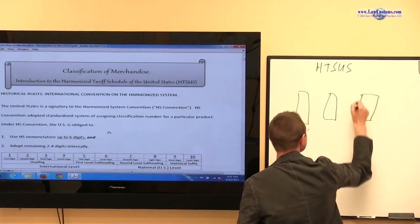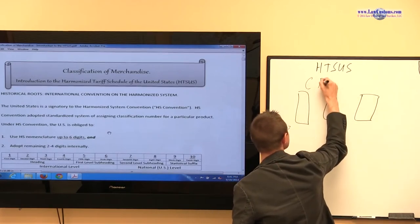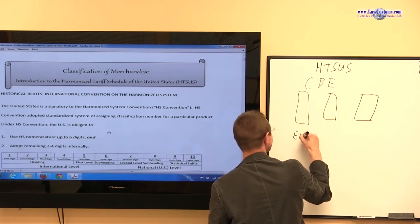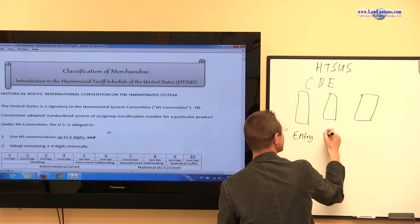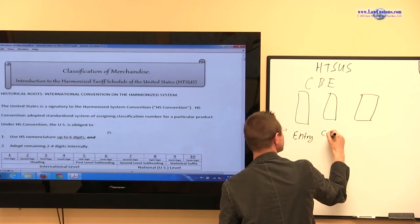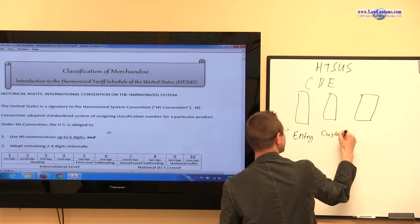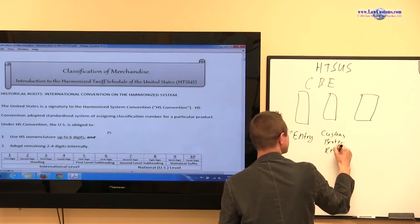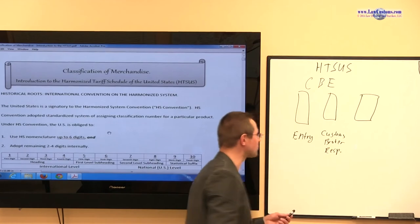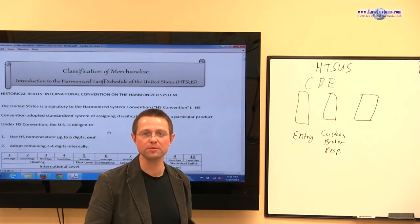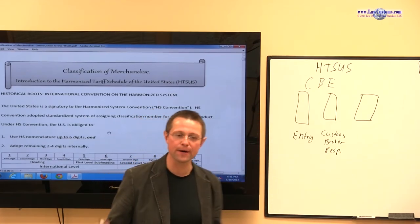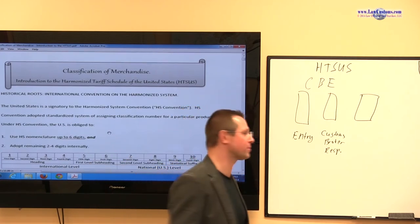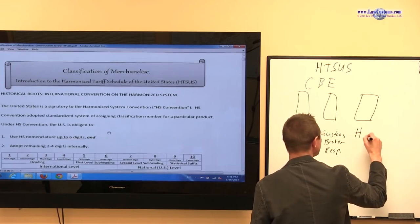The pillars are: entry, then customs broker responsibilities, which includes not only section part 111 but also includes penalties, for example, and also includes the record keeping requirements.